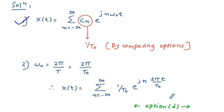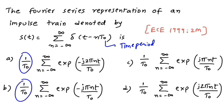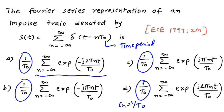Applying the synthesis equation, x(t) = Σ cₙ · e^(+jnω₀t). Here, T₀ is clearly the fundamental time period. Looking at the options, the value of cₙ is common to all of them: cₙ = 1/T₀. So the part that differs across options is the bracket inside the exponential, which must be of the form jnω₀t.